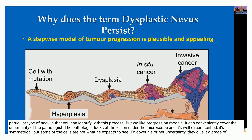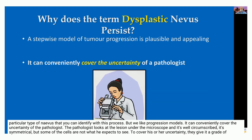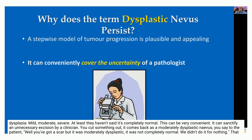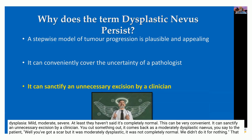We like progression models, and they can conveniently cover the uncertainty of a pathologist. The pathologist looks at a lesion under the microscope — it's well circumscribed, it's symmetrical — but some of the cells are not what they expect to see. To cover that uncertainty, they can give it a grade: mild, moderate, or severe dysplasia. At least they haven't said it's completely normal. This is convenient, and it can sanctify an unnecessary excision by a clinician.